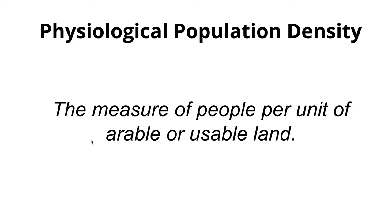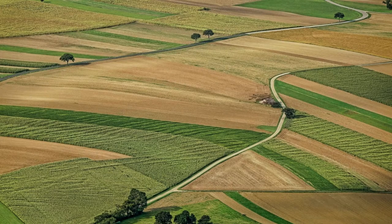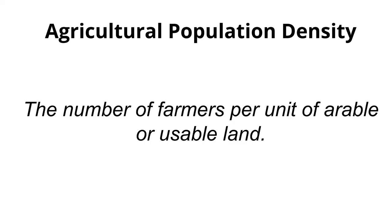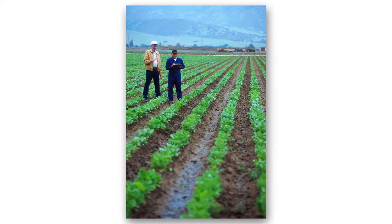Physiological population density is a little different because it measures the amount of people per unit of arable land. Arable land is also known as farmland. Agricultural population density is the number of farmers per unit of arable or usable land, so whereas physiological density counts all people, this one has to do with farmers specifically.